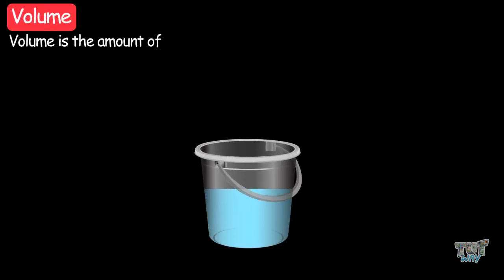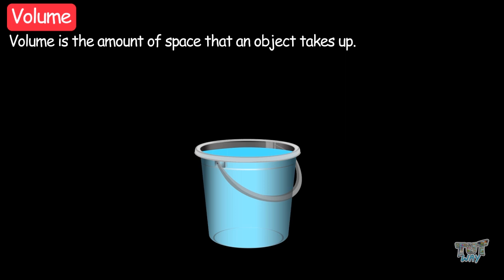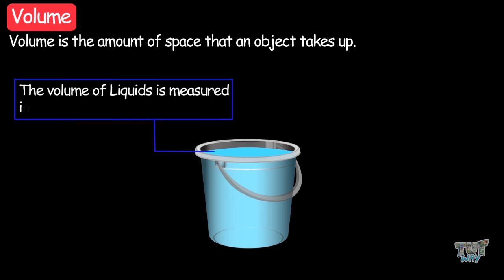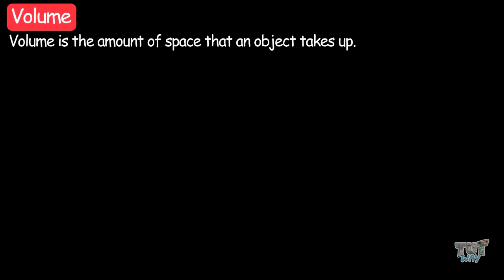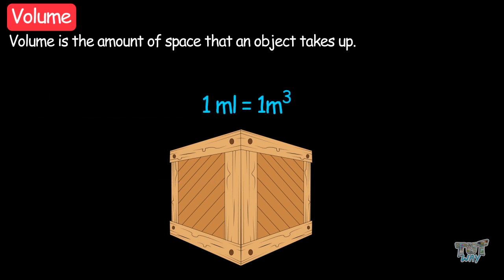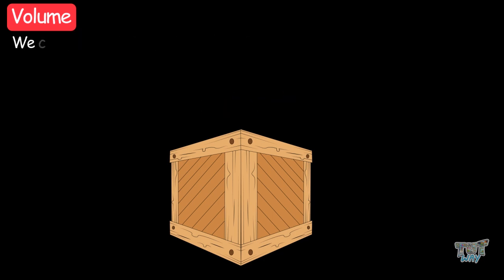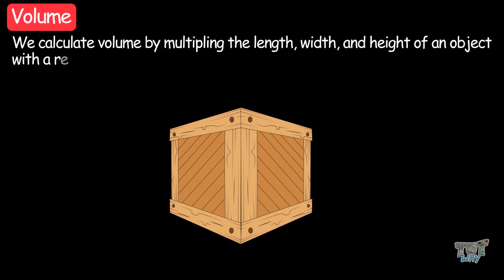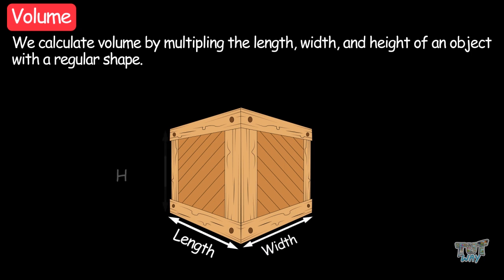Now let's learn about volume. Volume is the amount of space that an object takes up. The volume of liquids is measured in milliliters and liters, whereas the volume of solids is measured in cubic centimeters or cubic meters. One milliliter equals one cubic centimeter. We calculate volume by multiplying the length, width, and height of an object with regular shapes.